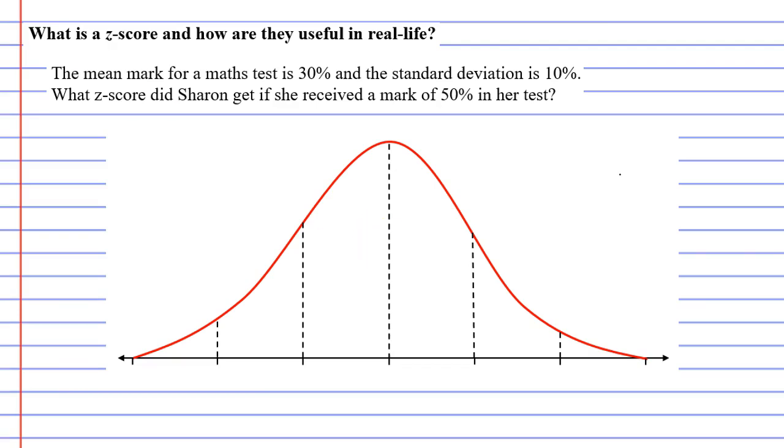We know that the mean mark is 30%, so that's going to go right in the middle where the peak of our bell curve is. And we'll write down that that's the mean.